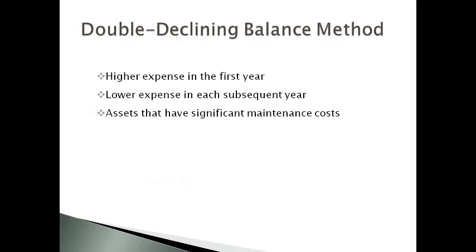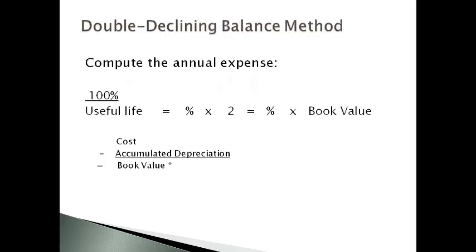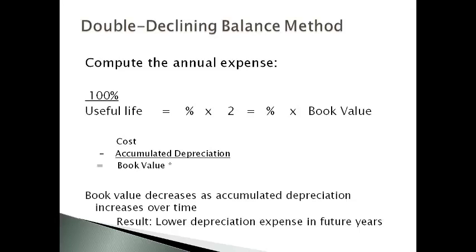The next method is referred to as double declining balance. Double declining balance results in a higher expense in the first year and a lower expense in each subsequent year. This method is most commonly used for assets that have significant maintenance costs. Depreciation expense decreases and maintenance expense increases as the asset ages, and the two expenses combine to give a fairly constant expense of using the asset each year. The annual depreciation expense is computed as 100% divided by the estimated useful life, times 2 — the double — to get the percent that is multiplied by the book value. The lower book value in future years results in lower depreciation expense in future years.